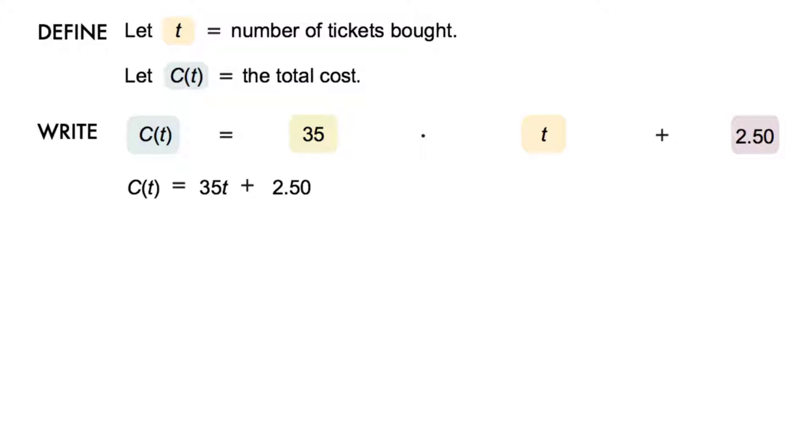We were asked to evaluate the cost of four tickets. So we substitute 4 for t, our input variable. C(4) equals 35 times 4 plus $2.50. And we evaluate, 35 times 4 plus $2.50 is $142.50.